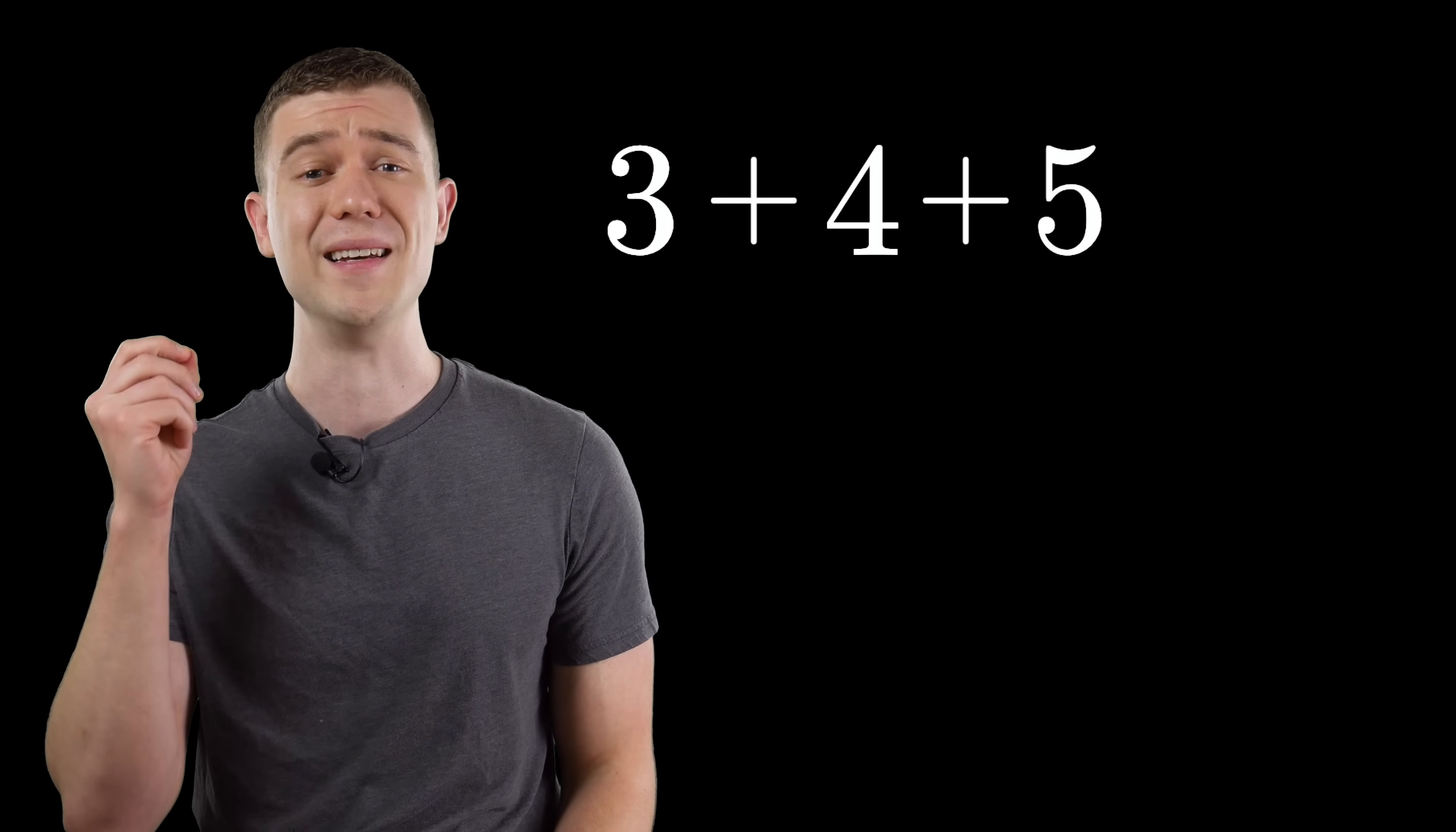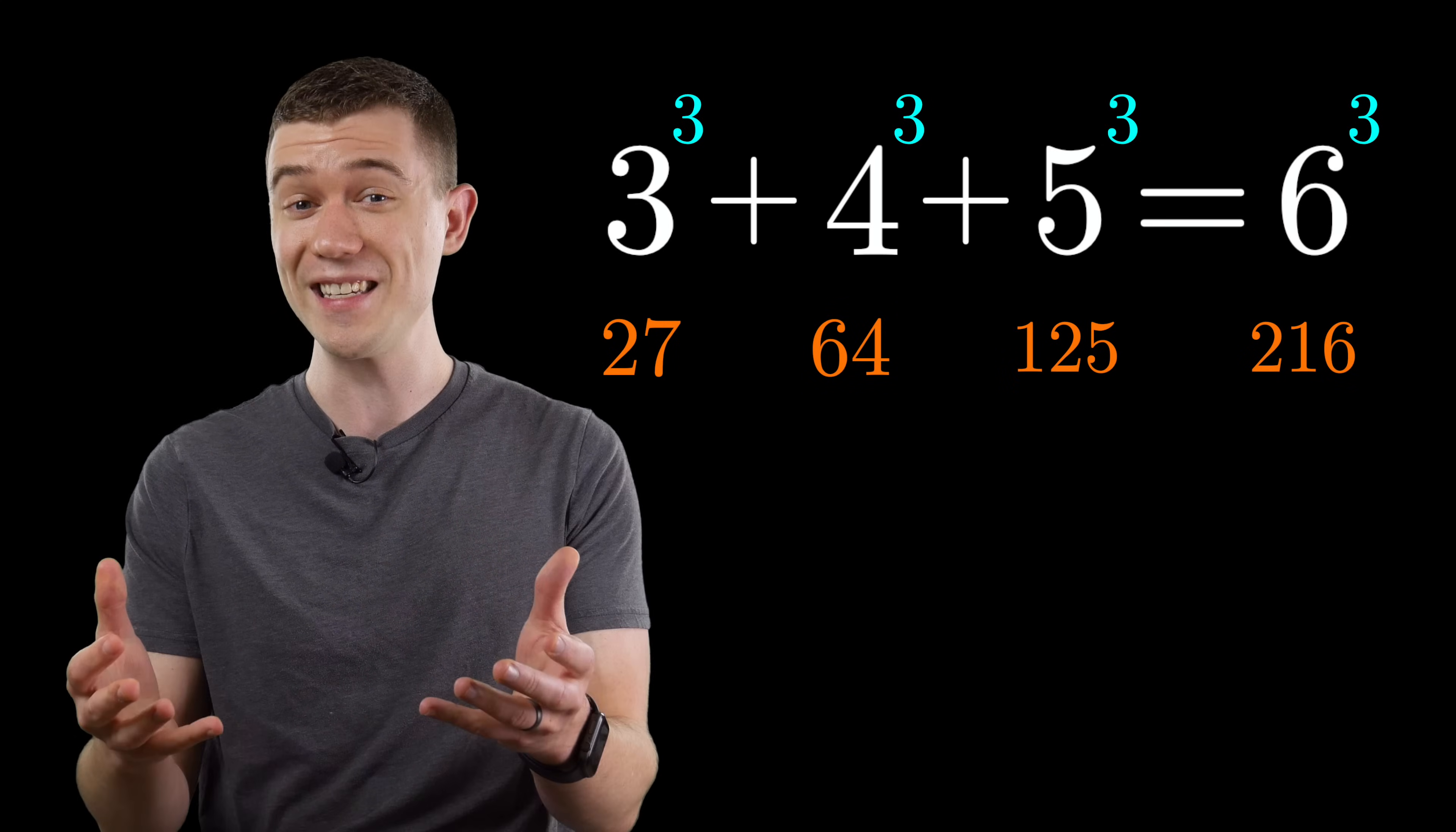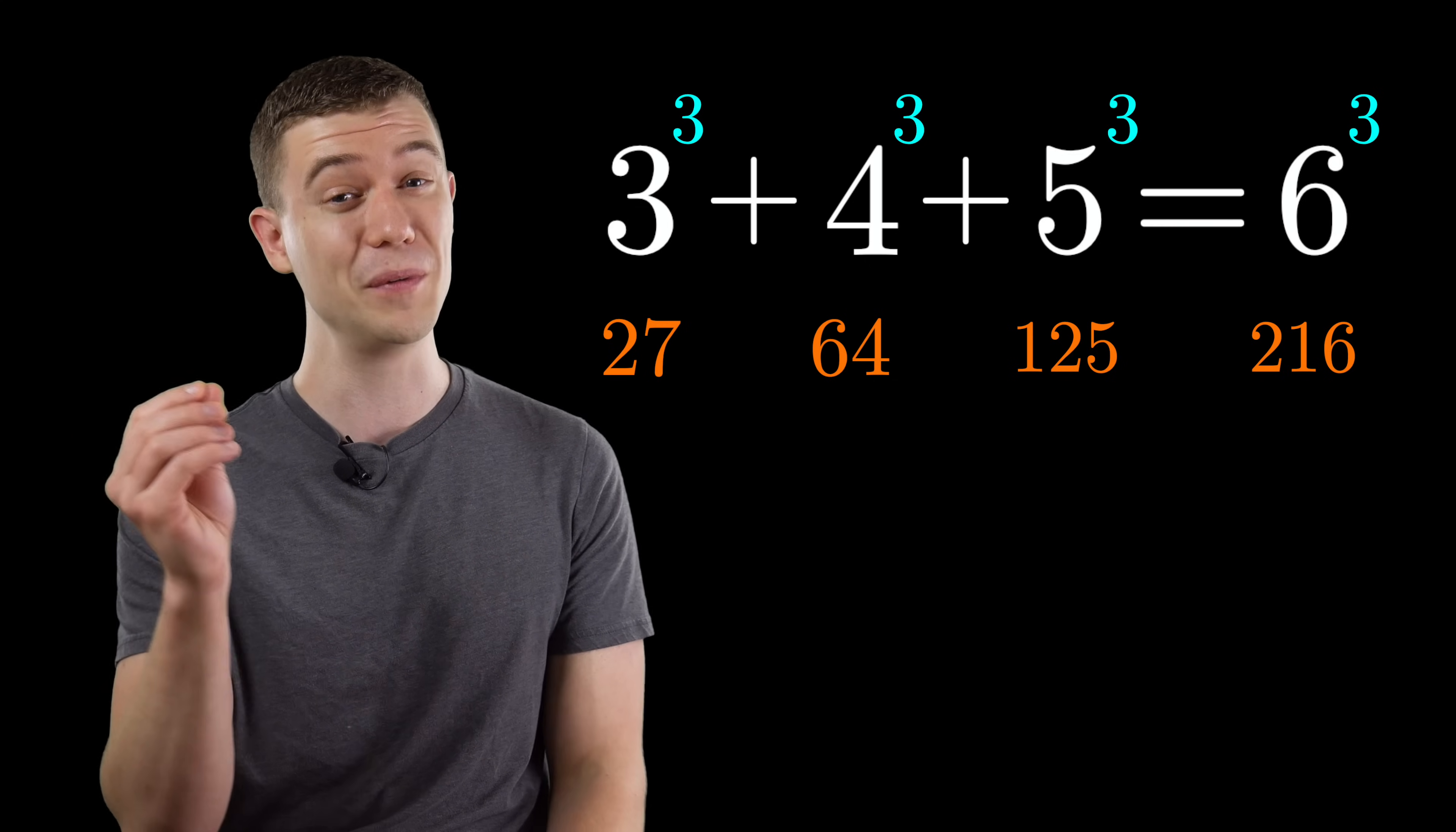3 plus 4 plus 5 is 6. Oh wait, that's if they're all cubed. Right, 3 cubed plus 4 cubed plus 5 cubed is 6 cubed, whether you believe it or not. And that's just the first of my top 10 most incredible equations you've probably never seen.